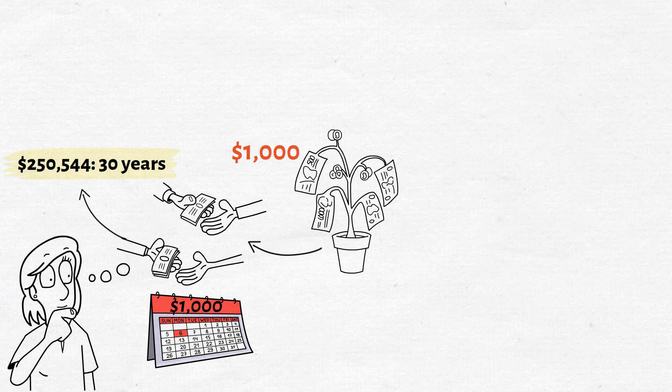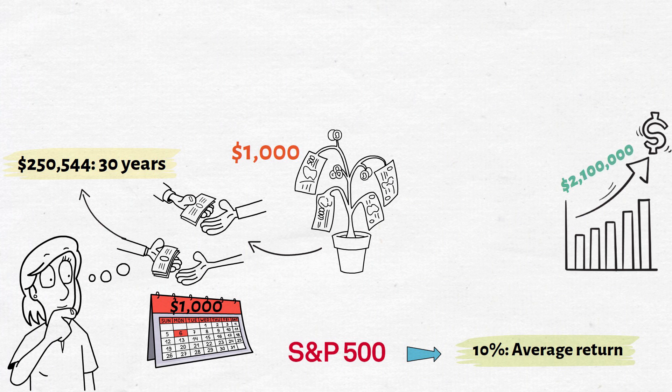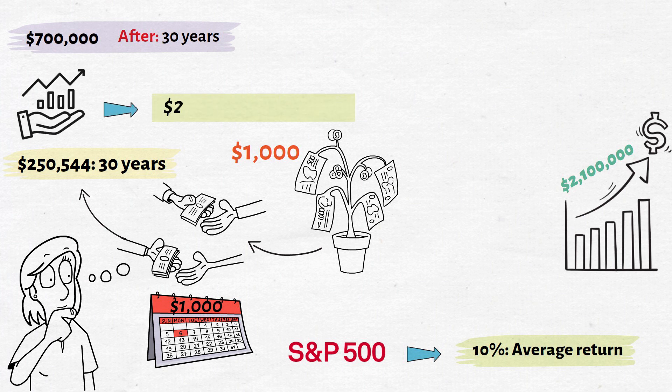But by investing $1,000 per month in the S&P 500 and assuming a 10% average return, your money will have grown to $2,171,000 after 30 years. Your total investment of $2,171,000 minus $251,544 in interest leaves you with $1,919,456.